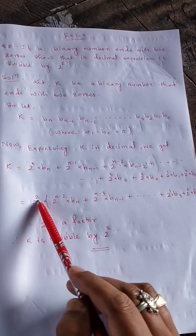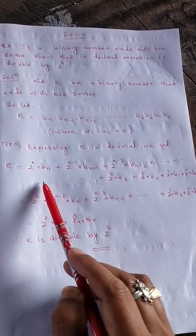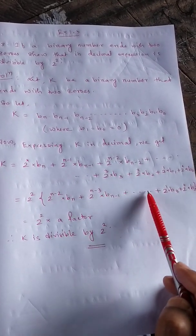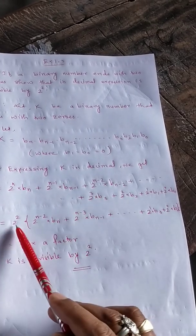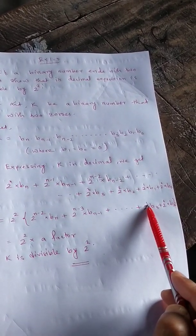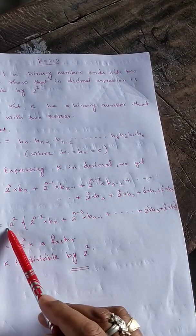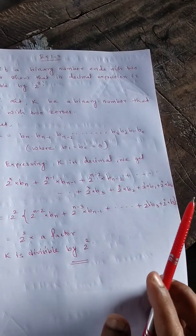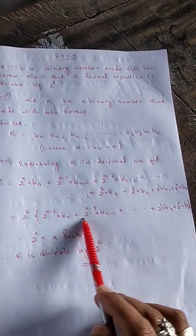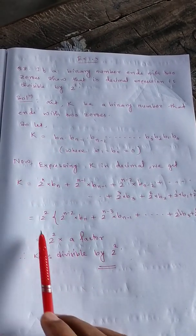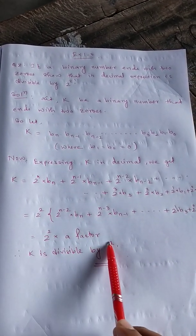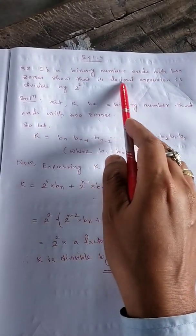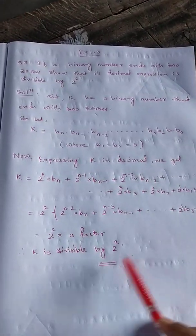Now, to show divisibility by two squared, we take 2² as a common factor. When we factor out 2² from each term: from the 2^n term we get 2^(n-2), from 2^(n-1) we get 2^(n-3), continuing down, from 2³ we get 2¹, and from 2² we get 2⁰ times b_2. So k equals 2² times some integer factor. Therefore k is divisible by 2², which proves that a binary number ending with two zeros is divisible by four.